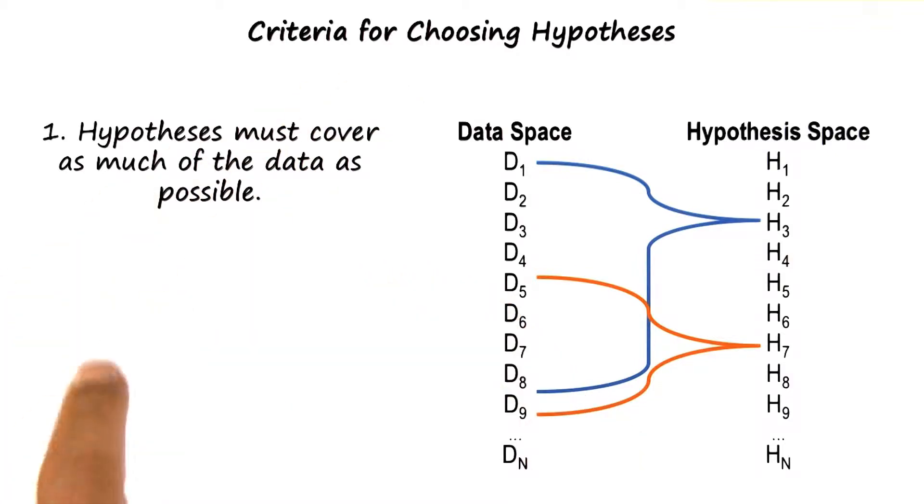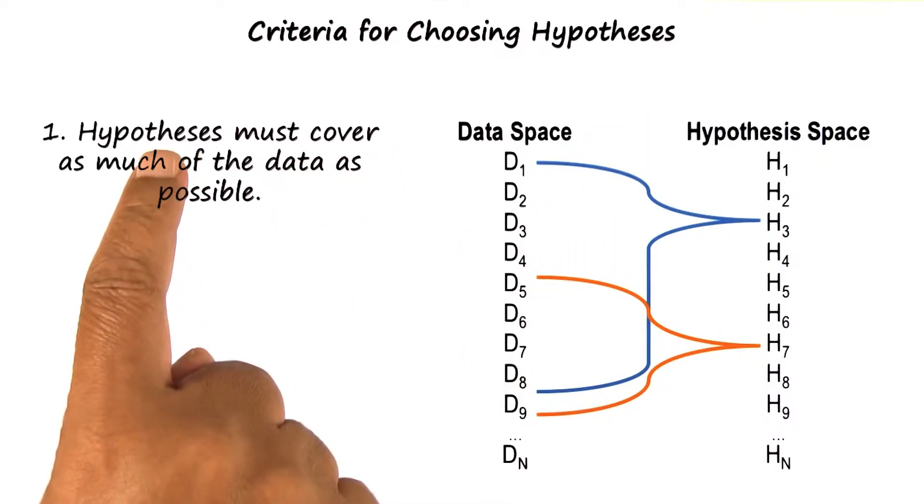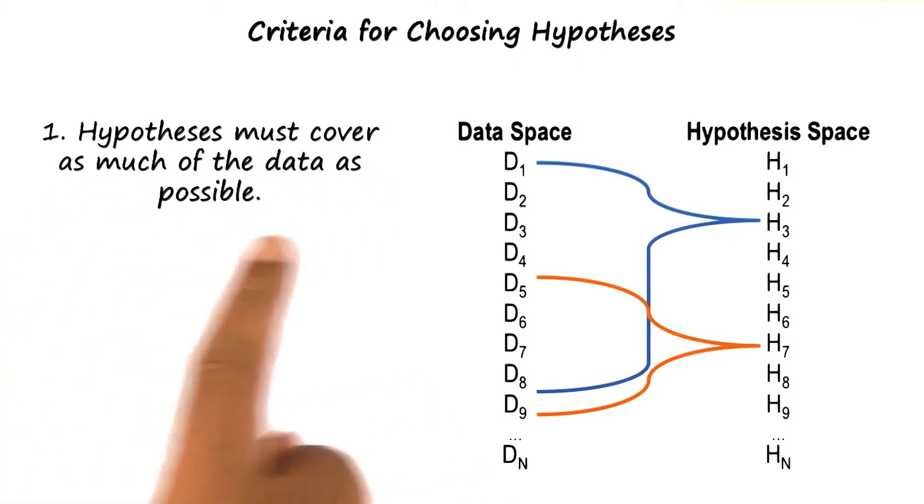Now that we understand abduction, and now that we know the diagnosis is an instance of abduction, let us ask ourselves, how does this understanding help us in choosing hypotheses? So the first principle for choosing a hypothesis is explanatory coverage. A hypothesis must cover as much of the data as possible.